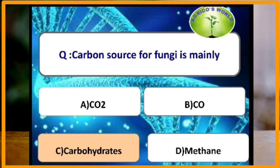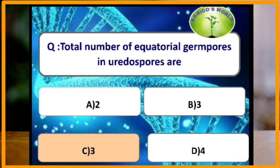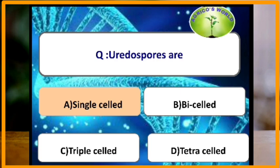Which one is a good safener? Lime is usually considered a good safener. The main carbon source for fungi is carbohydrates. The total number of equatorial germ pores in uredospores is three.